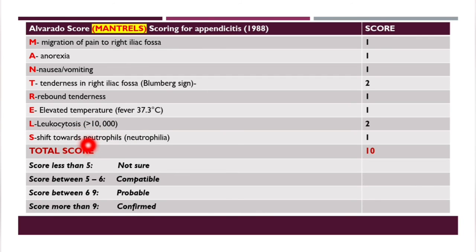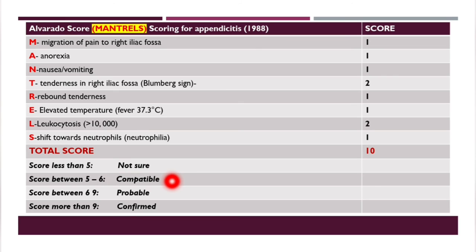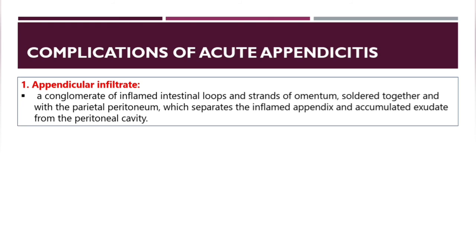In the Alvarado score, each feature scores one point except Bloomberg sign and leukocytosis, which each score two, giving a total of ten. A score less than five makes appendicitis unlikely; five to six is compatible; six to nine is probable; and more than nine confirms appendicitis.